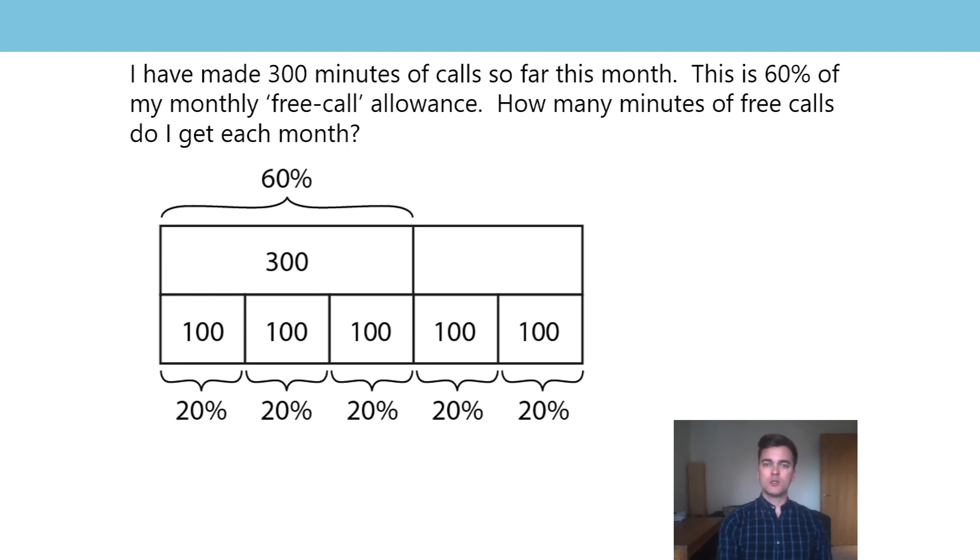Two twenties, two hundreds, two hundred. So what is the total monthly allowance? Well, now I can see it's made of the 300 I've used and the 200 I've not yet used. 500 minutes.